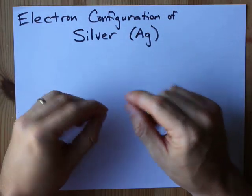The electron configuration of silver follows most of the regular rules that you're familiar with. 1s2, 2s2, 2p6. You know, the order of filling.